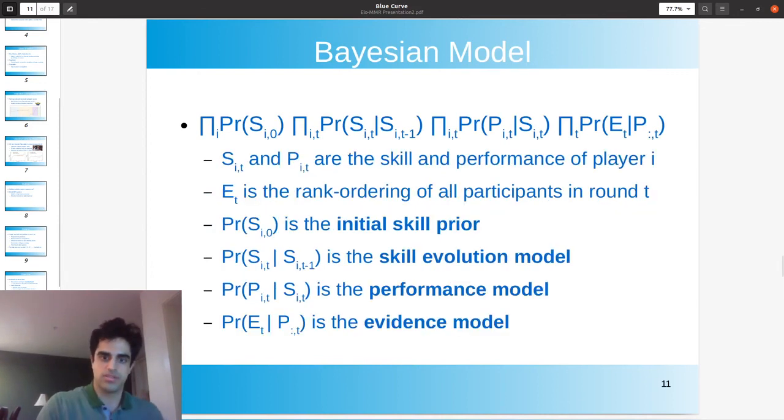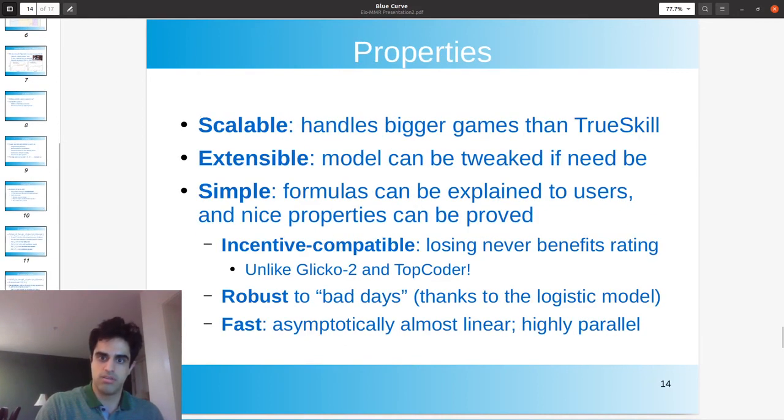And so as a result, we get a much simpler algorithm than true skill. And it's also, it turns out, it's a lot more scalable, it can handle much bigger games. It's also extensible, for example, we can change the performance model if we believe that this particular sport requires it. And the fact that it's simple means that we can prove some nice properties.